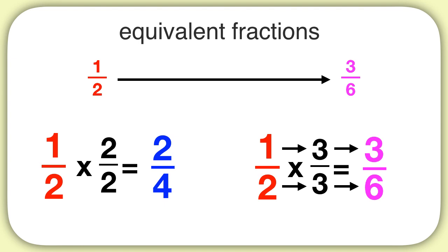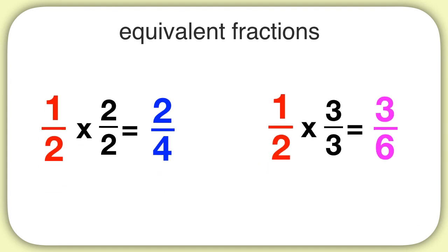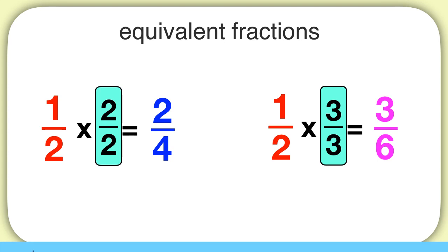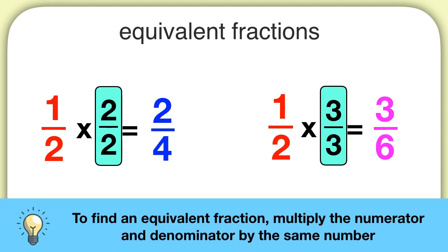So now let's notice: to find equivalent fractions, we took 1 half and we multiplied both the numerator and the denominator by the same thing. To find an equivalent fraction, all you need to do is multiply the numerator and the denominator by the same number.